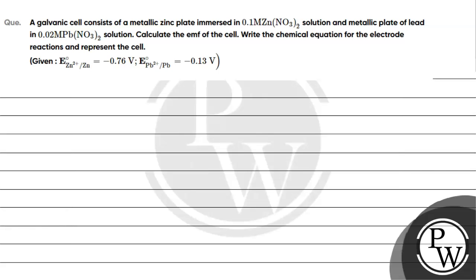Hello, let's read this question. A galvanic cell consists of a metallic zinc plate immersed in 0.1 molar zinc nitrate solution and a metallic plate of lead in 0.02 molar lead nitrate solution. Calculate the EMF of the cell, write the chemical equation for the electrode reactions, and represent the cell.